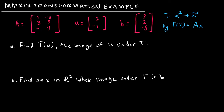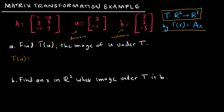Let's take a look at this example. I have a function T mapping R2 to R3. Even before they ask any questions, it's clear that u is going to be in the domain, but b, because it's in R3, is obviously going to be in the co-domain. For part A, find T(u) — the image of u under T. T(u) is defined as A times u, so I'm going to take A and multiply it by u. My result will be a column vector with three entries, since I'm mapping to R3.